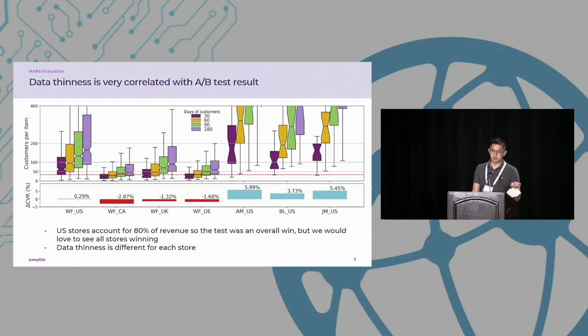And this was simply because the Wayfair US is the largest store and it was a successful test. So for example, you can see for Wayfair UK, which is what I showed earlier, we need to use 90 days, which is that green box plot, before the 25th percentile exceeds the Wayfair US 25th percentile, which is that dotted red line.